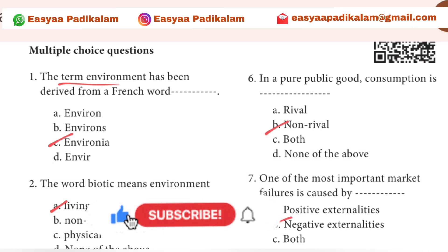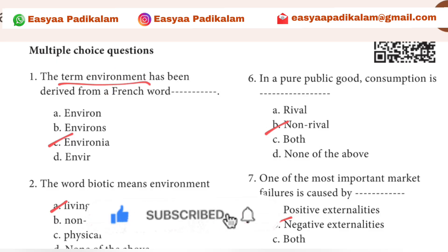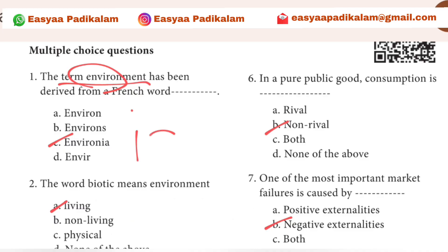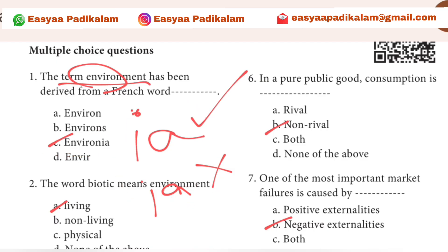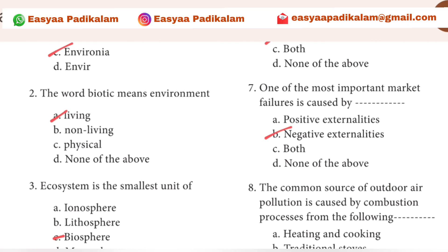First question: this term is environment. If you can write environment, we can do that with environment and ask why is this environment? Not in the environment. We can say there is environment — the word biotic means environment. We can say biome in biology.